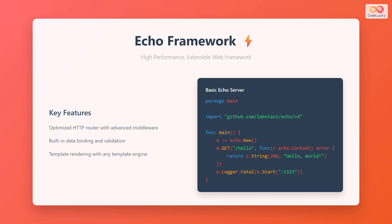ECHO also supports template rendering with any template engine, making it suitable for building full-stack web applications, not just APIs. The code example demonstrates ECHO's simple setup process: after importing the ECHO package, you create a new ECHO instance, define a route handler, and start the server with proper error handling using the logger. ECHO's approach emphasizes extensibility and provides more built-in features compared to JIN, which can be beneficial for complex applications that require advanced functionality without additional third-party packages.